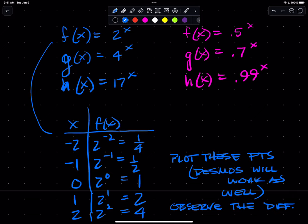For instance, I did this blue t-table where I have x and f(x), and I substitute a value of negative two for x in the blue function f(x) and get a quarter. So I have point (-2, 1/4), then (-1, 1/2), (0, 1), (1, 2), and (2, 4). Plot those points.